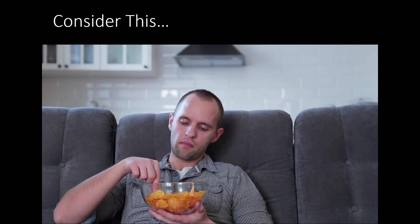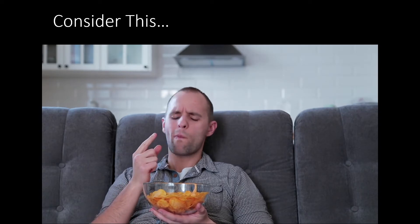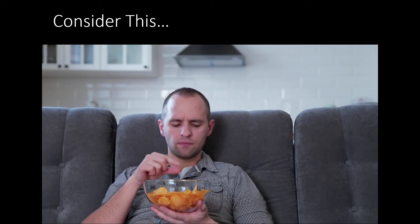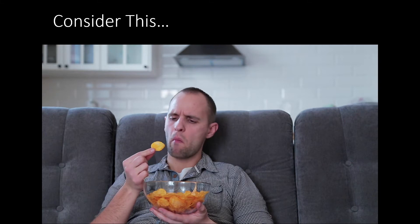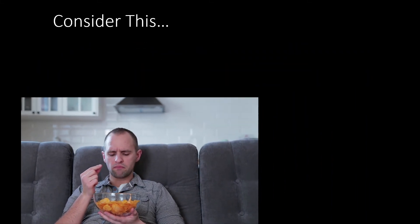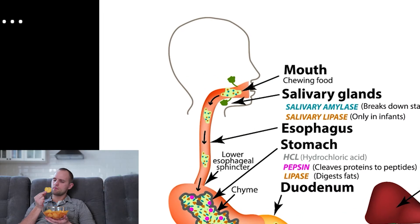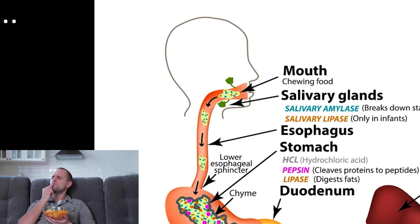Consider this: all of these biological macromolecules are constantly being created and broken down within your body. When you eat a chip, for example, a complex process begins to unfold. Starting in your salivary glands, the protein amylase is created out of many amino acids. This protein is responsible for breaking down amylose, the glucose-based starch polymer that potatoes use to store energy.